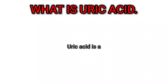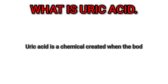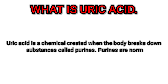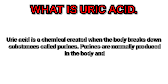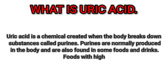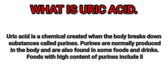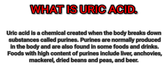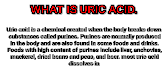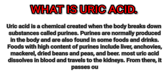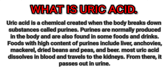Uric acid is a chemical created when the body breaks down substances called purines. Purines are normally produced in the body and are also found in some foods and drinks. Foods with high content of purines include liver, anchovies, mackerel, dried beans and peas, and beer.